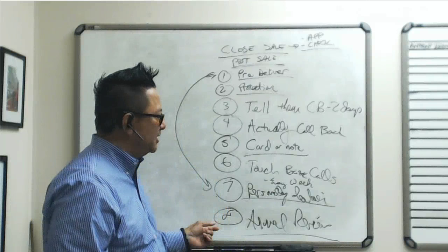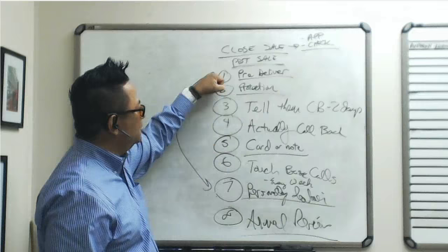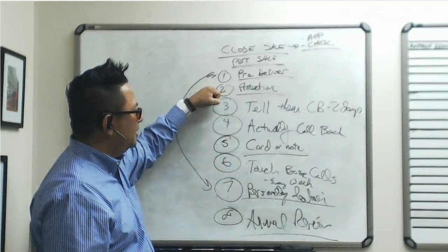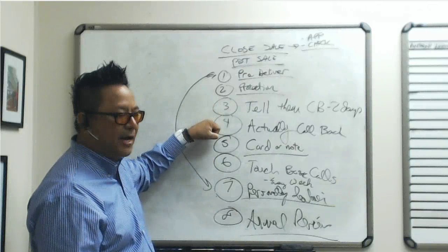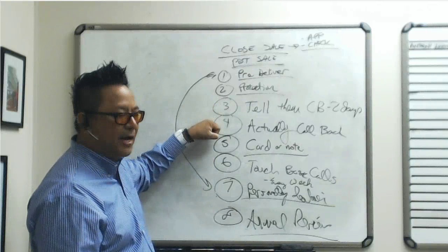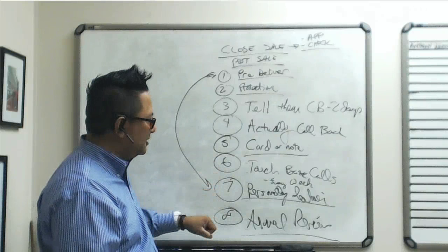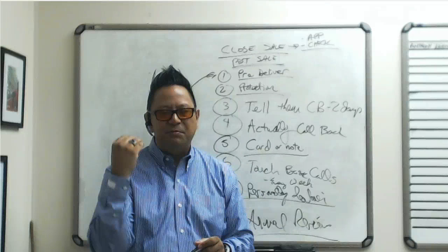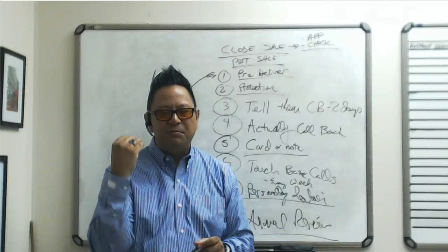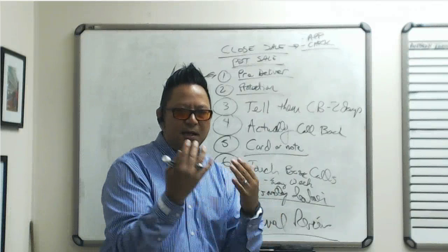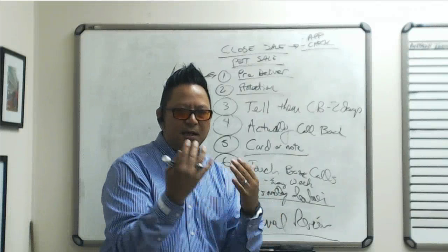That is how you get your placement persistency up to 90% — by following through on the post-sale process. Pre-deliver the policy, protect the sale, call back in two days, send a handwritten card, do touch base calls weekly during underwriting, personally deliver, and do annual reviews. This is the formula — the secret to being a professional in this business. This is how you raise your income by 15-20%, honestly, and even more from the loyal clients you'll write again.